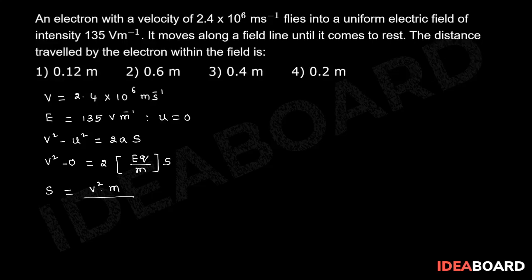s = (2.4 × 10^6)² × (9.1 × 10^-31) / [2 × 135 × q], where the mass of the electron is 9.1 × 10^-31.